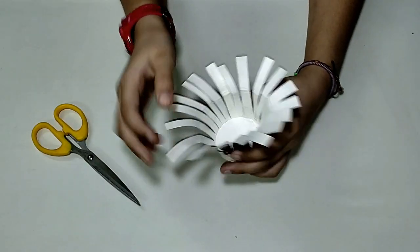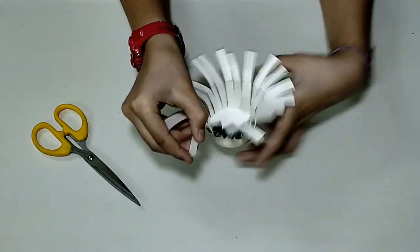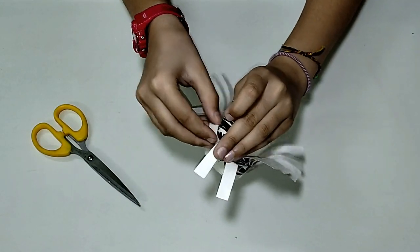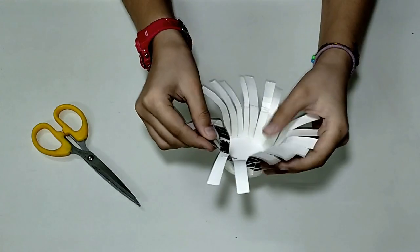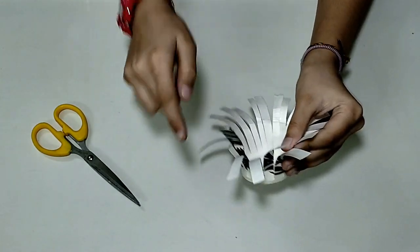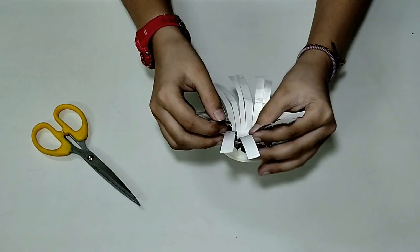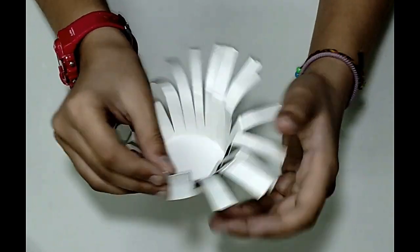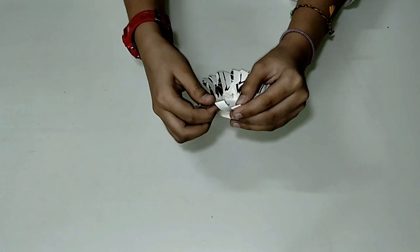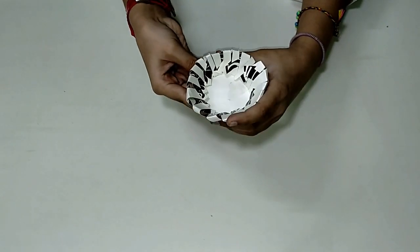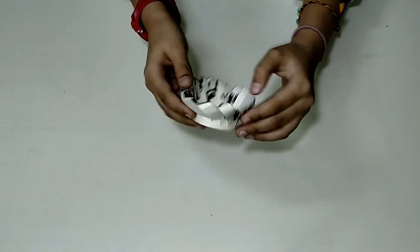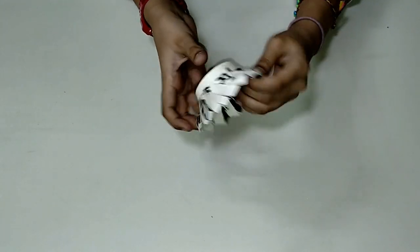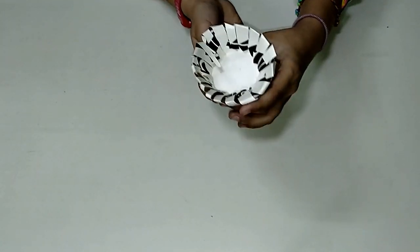For the next step we have to take one of the strips, leave one and put it inside the next one like this. We have to do the same for all the strips and it will become a basket by the end of this step. There we go. Now our basket is ready. Once it is, it should look like this.